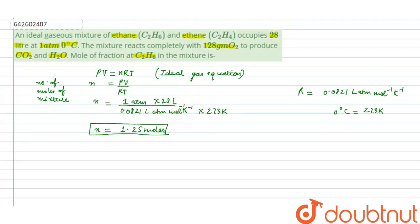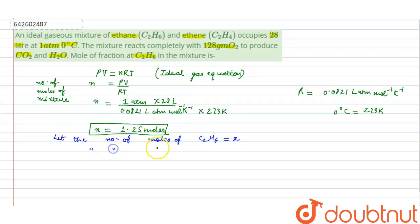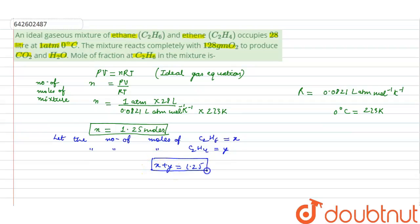We let the number of moles of C2H6 be x and the number of moles of C2H4 be y. Since the total moles of the mixture is 1.25, we have the equation: x + y = 1.25. This is equation number one.